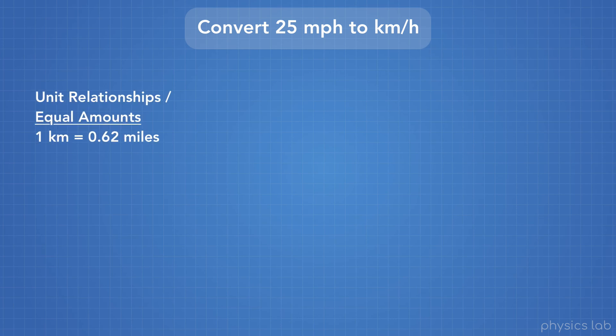Let's try one more example. Let's convert 25 miles per hour to kilometers per hour. First, we need to know the relationships between the units that we're dealing with. And in this case, we're given that 1 kilometer equals 0.62 miles.